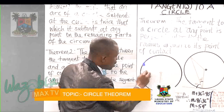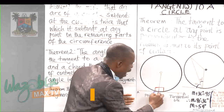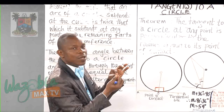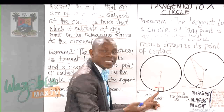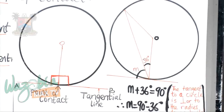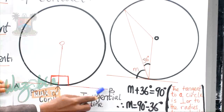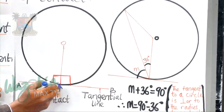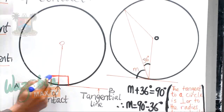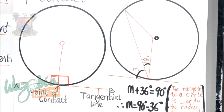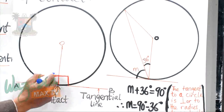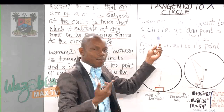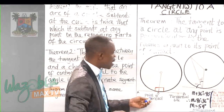Look at this circle. You will notice that I have a line here. At the point of connection between the circle and the line, we have what we call the point of contact. Once there is a point of contact, the line becomes a tangent — a tangential line. In a situation like this, if you have a radius drawn from the center of that circle such that it touches the point of contact, then the angle formed there will be 90 degrees — 90 to this side and 90 to the other side. That was what they meant when they said the tangent to a circle at any point is perpendicular. You remember perpendicular lines from primary school.